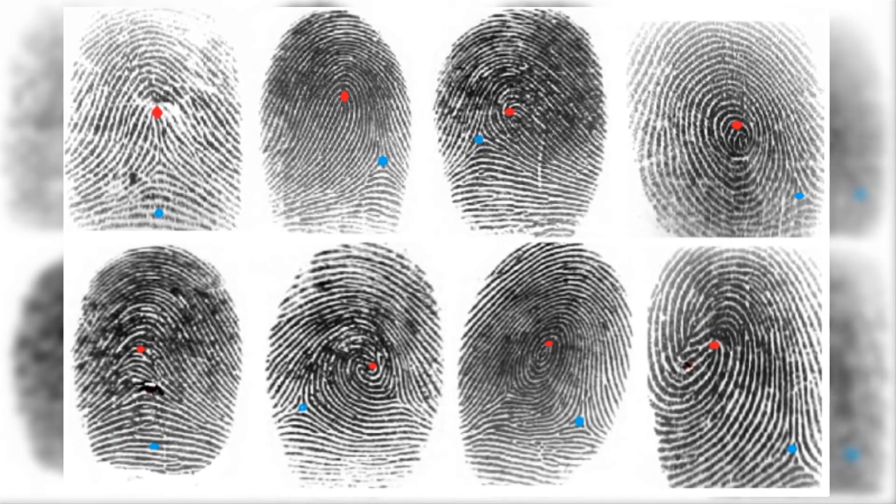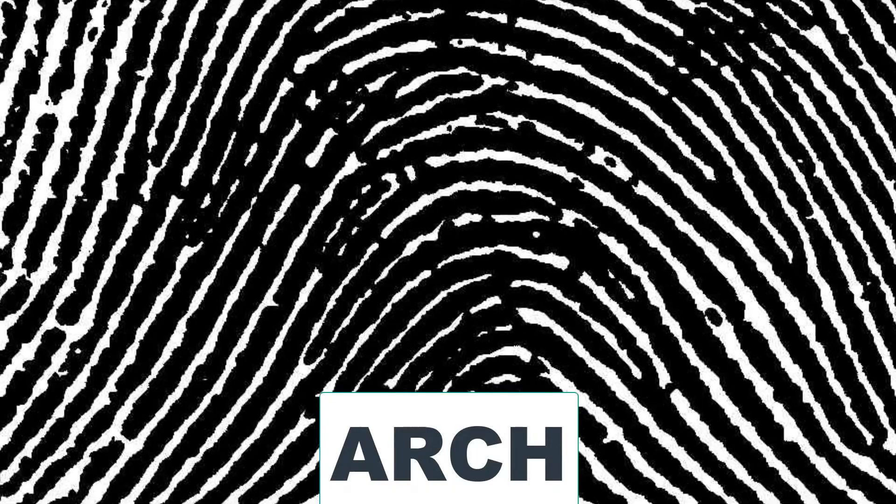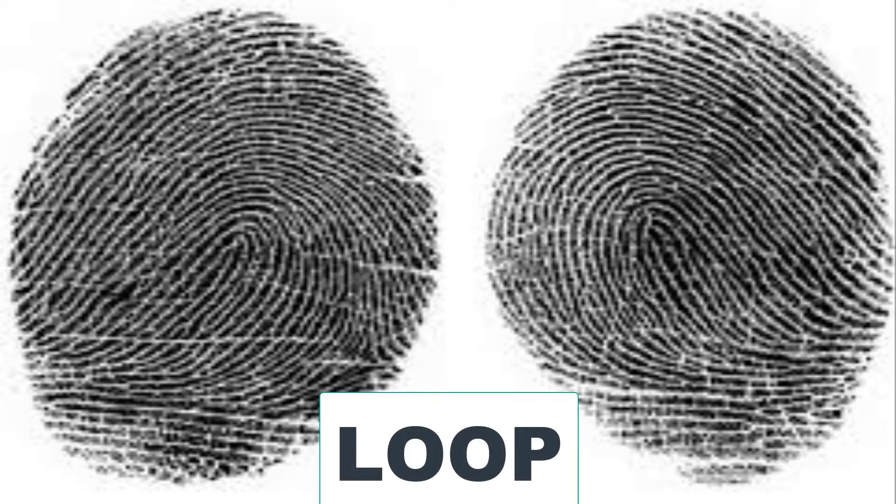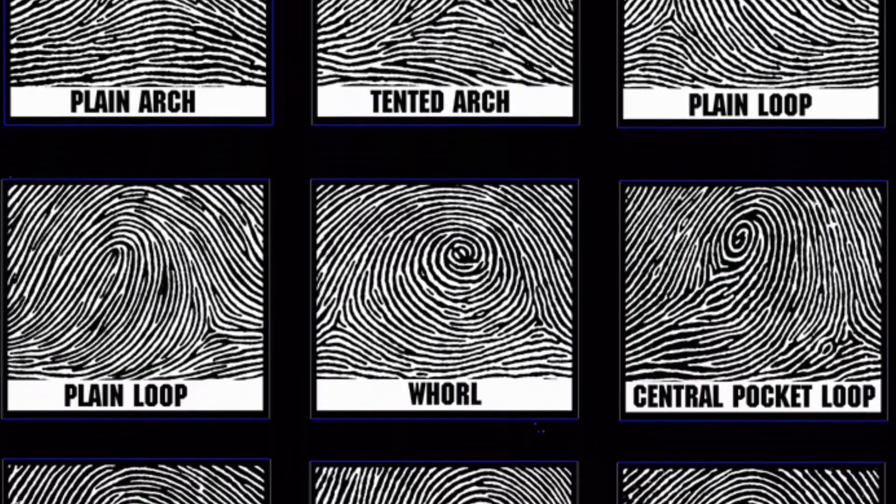The arch, which looks a bit like a cross-section of a hill; the loop, which is teardrop-shaped; and the whorl, which is reminiscent of a whirlpool. These are further classified.